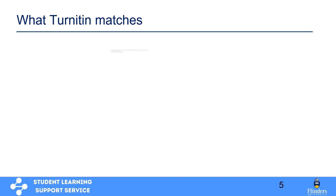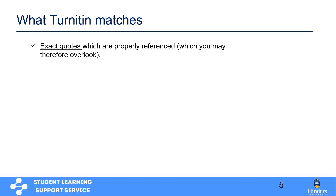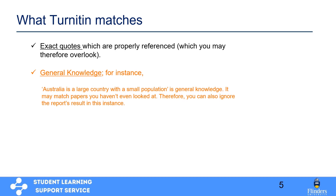What exactly does Turnitin match? Well, it matches exact quotes. For example, if you have copied and pasted a particular sentence — say, 'The train stops at Birmingham and Bristol' — and you may have used the correct referencing conventions with double quotations and the correct in-text citation format, it still matches it. So if you find that this happens, just ignore that. Sometimes it also matches general knowledge, such as 'Australia is a large country with a small population.' Many people could have used the same or very similar phrases, so you can largely ignore this too.